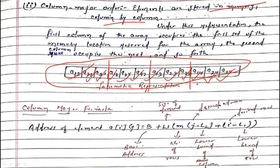Now the column-major formula. It is almost the same as row-major but with a slight difference. The base address and size of element remain the same, but here we require the number of rows instead of columns. In column-major, we are concerned about number of rows. The formula uses: desired column minus lower bound of column, then desired row minus lower bound of row.